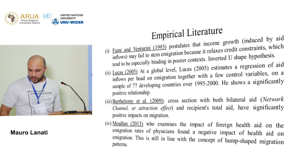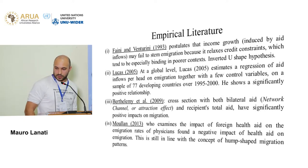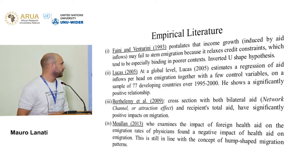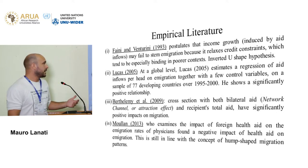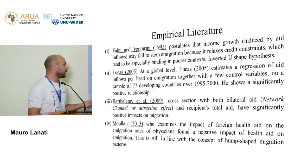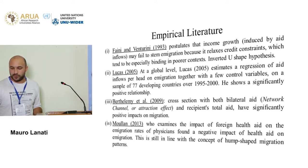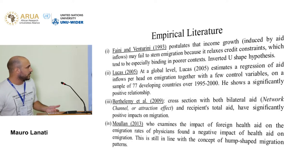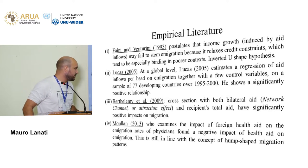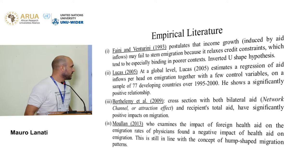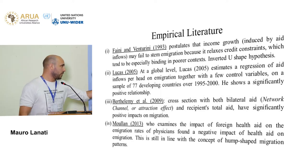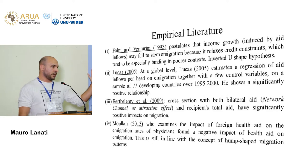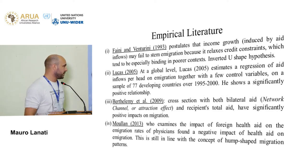On the empirical literature, definitely Faini and Venturini is probably the most important paper — it's quite old, from 1993 — but it postulates that income growth may fail to reduce immigration because it relaxes credit constraints, which tend to be especially binding in poor contexts. This is related to the inverted U-shape hypothesis well known by development economists. On the X-axis we have GDP per capita and on the Y-axis the migration rate. There is a positive slope for low levels of income per capita, and the slope becomes negative after a threshold. That's what is used to justify the budgetary constraint channel: it tends to be especially binding for the first part of the curve, and then less and less binding.